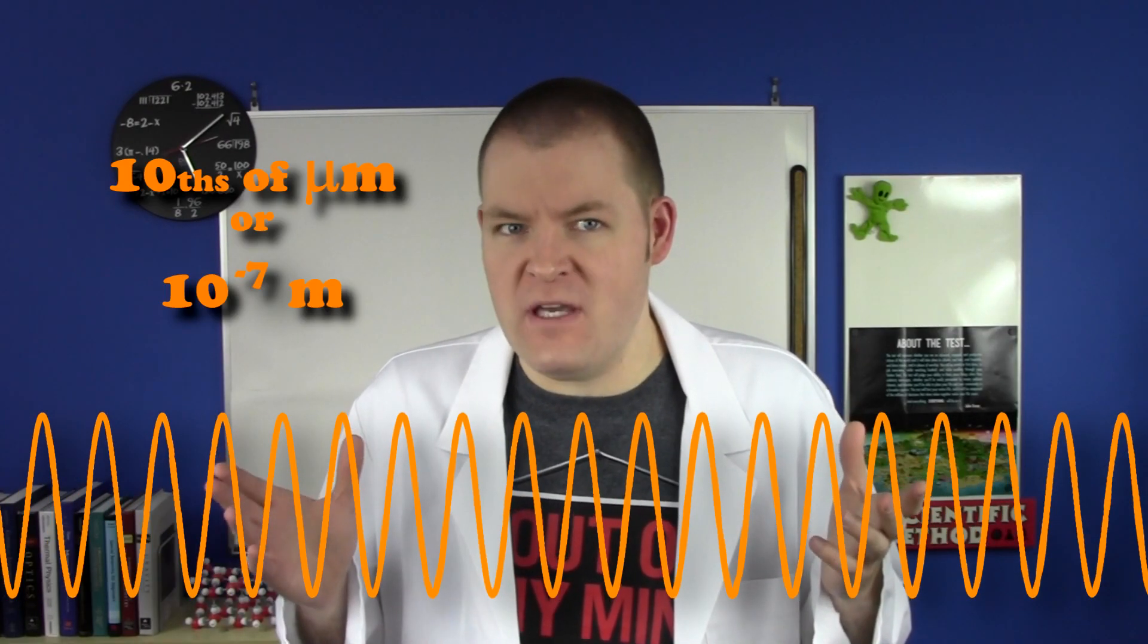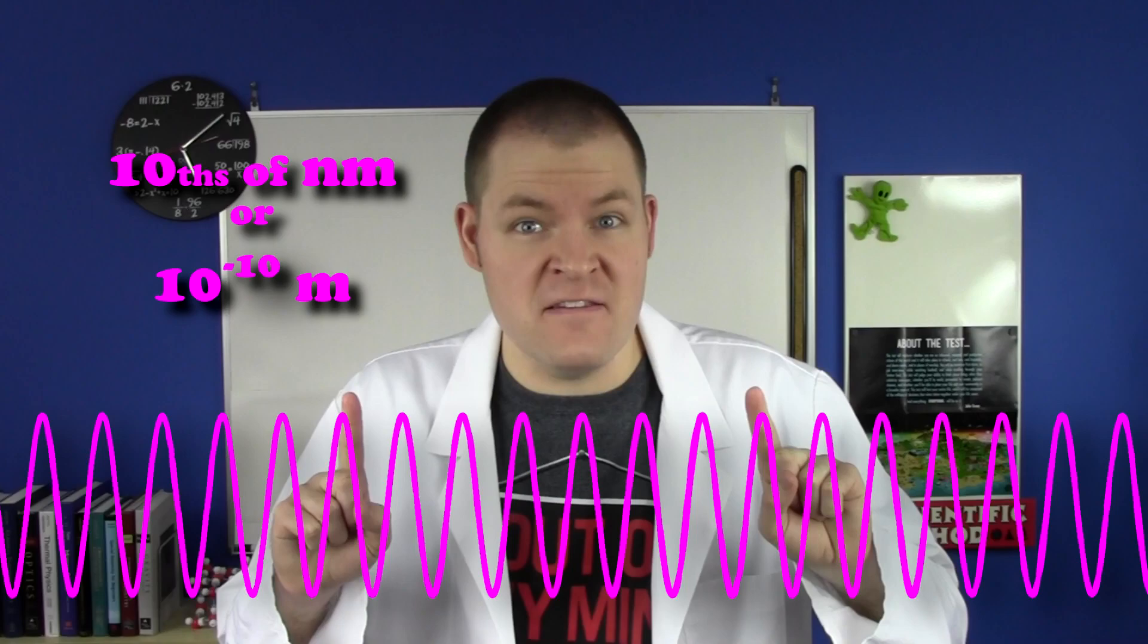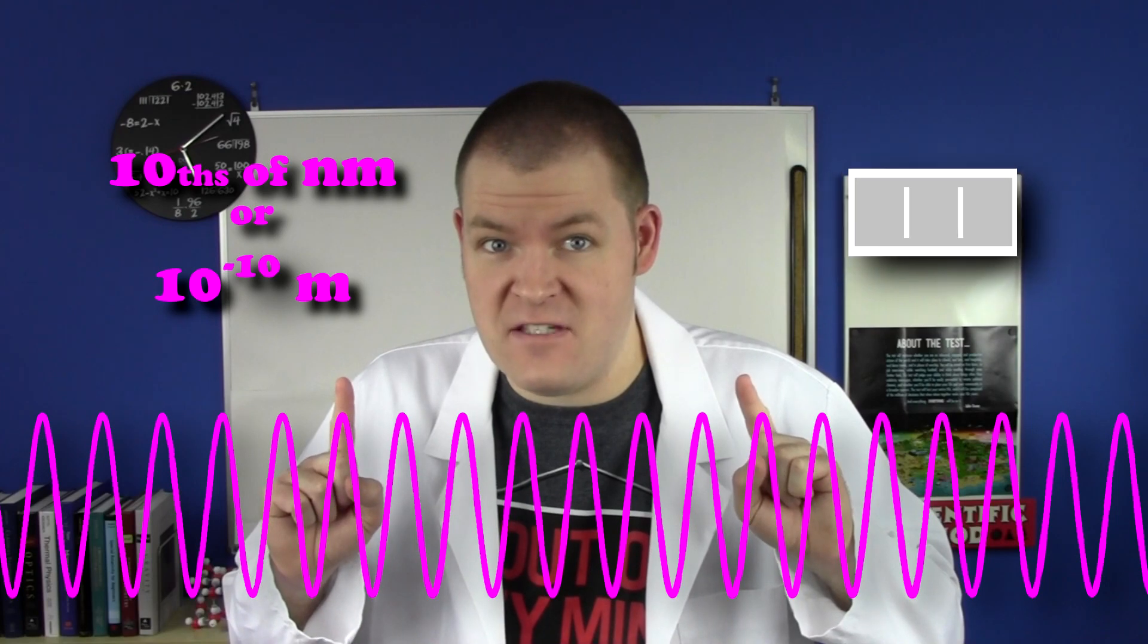Which brings us to the first problem. The size of visible light waves is on the order of tenths of micrometers. So the openings have to be small and close together for us to even notice this. Electron waves are on the order of tenths of nanometers. That's a thousand times smaller than visible light. Which means the slit device has to be a thousand times smaller. It's also really hard to get electrons by themselves.